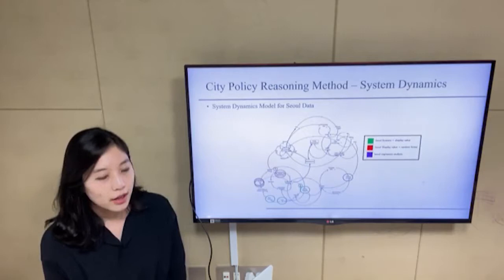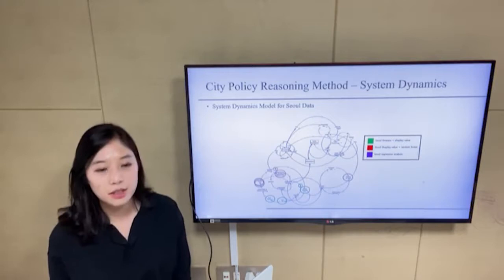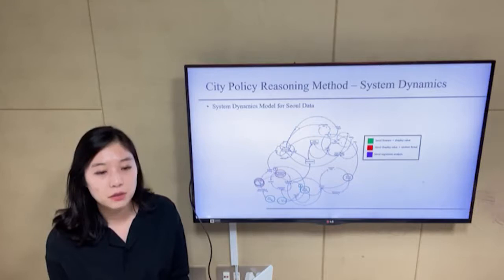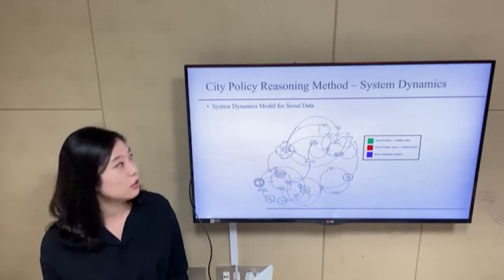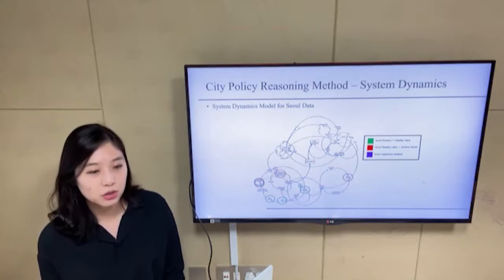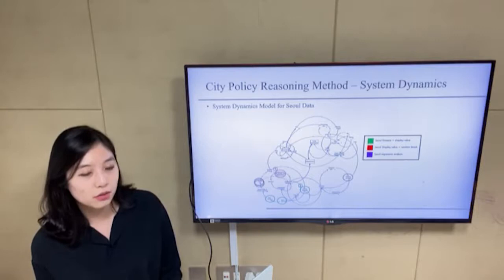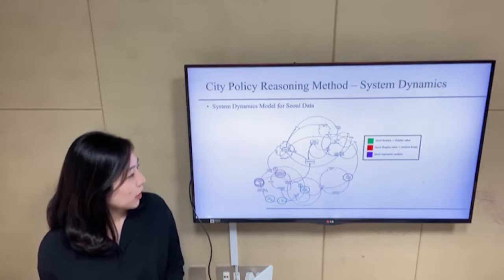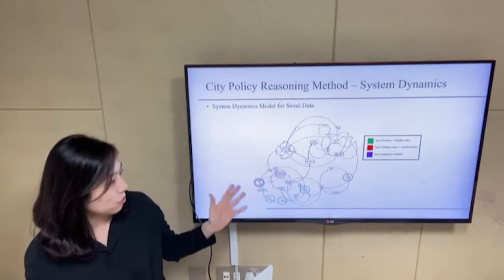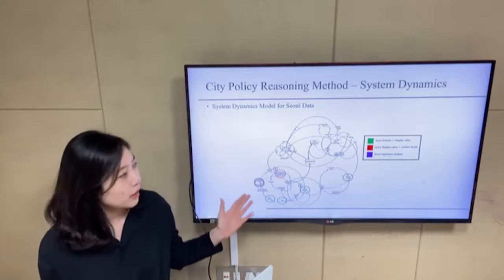For the last step, we designed the system dynamics model for the Seoul data for policymaking. System dynamics is a methodology for researching and managing complex feedback systems such as business or social systems. System dynamics modeling refers to a conceptual model structure expressed in the form of a causal loop diagram based on the model designer's understanding of the system. From this model, we can reason about policies and how they impact the city.